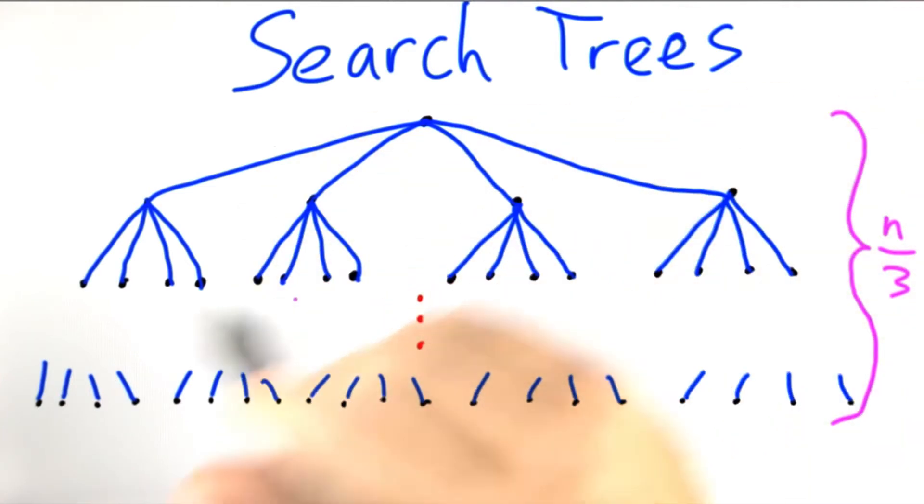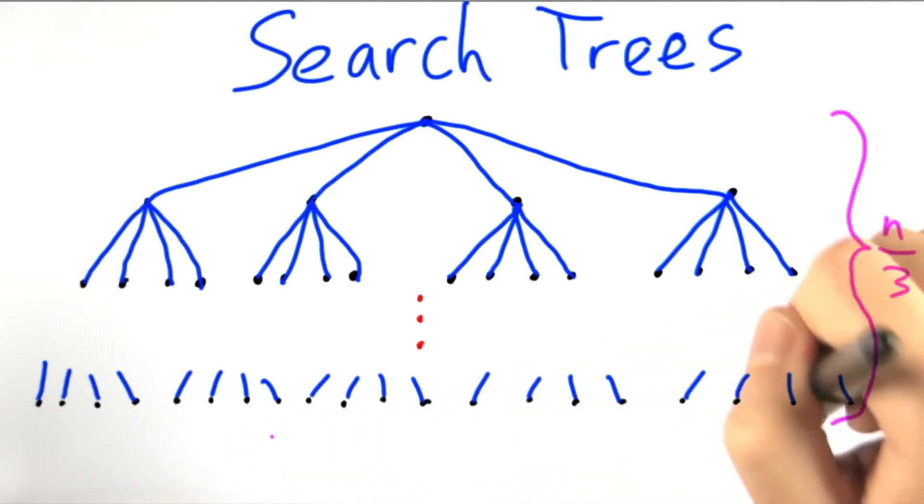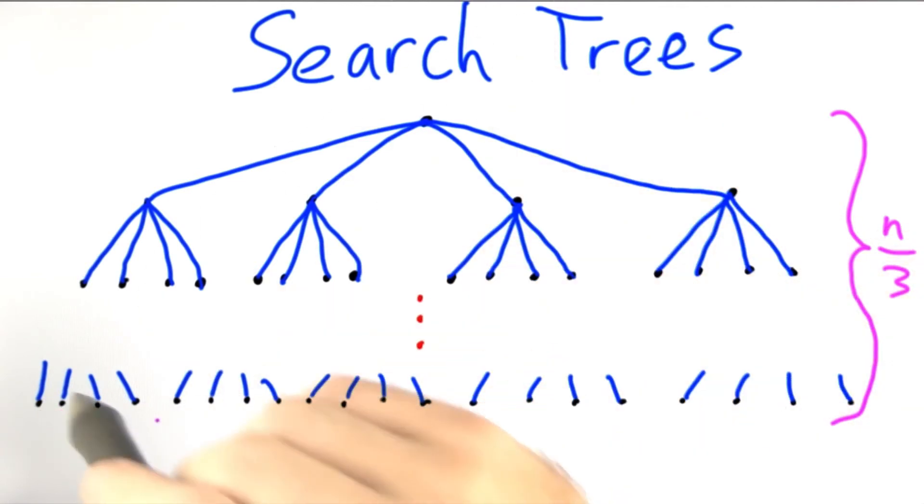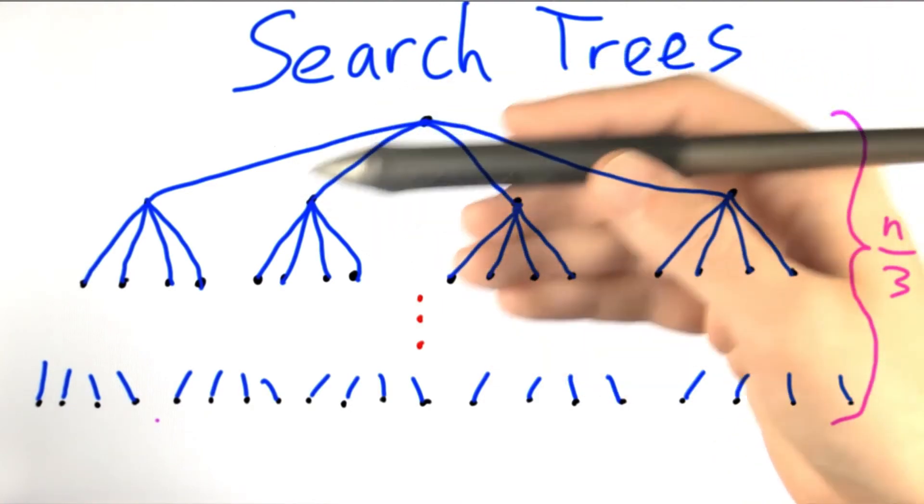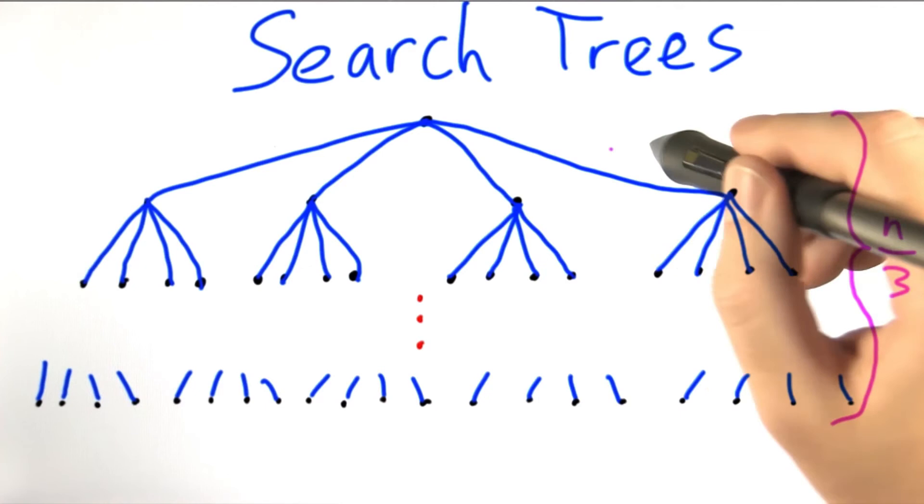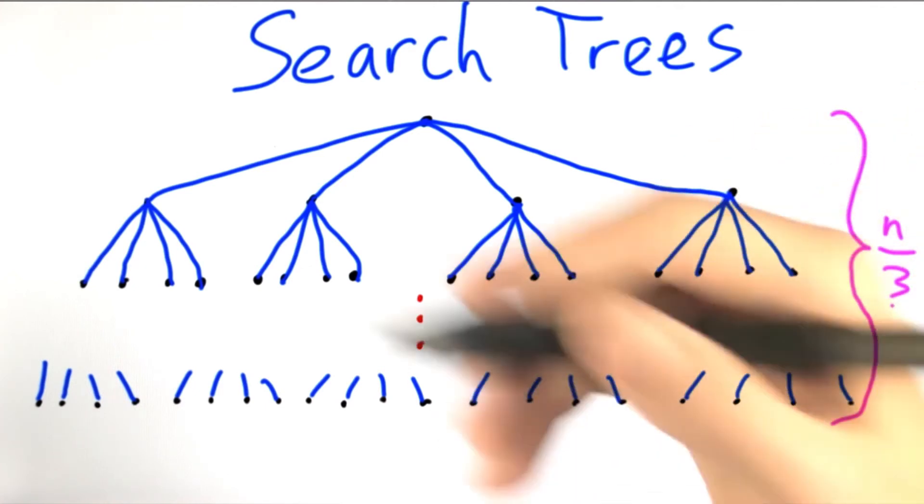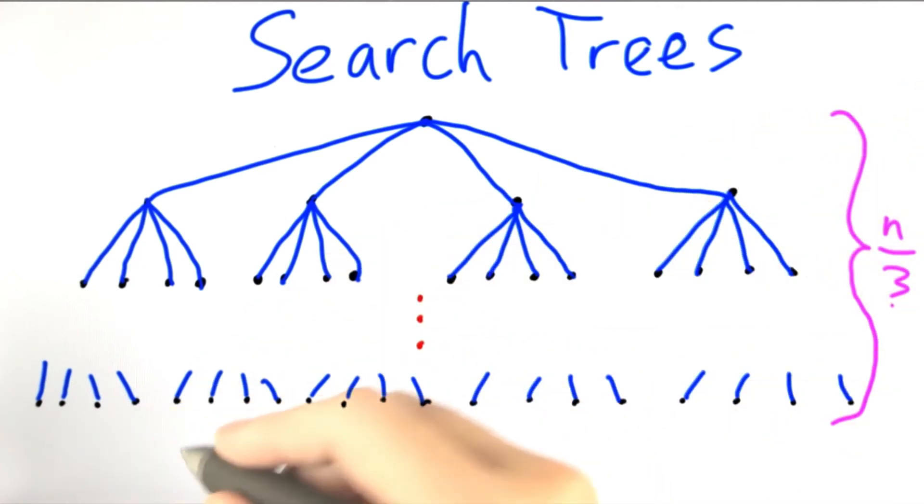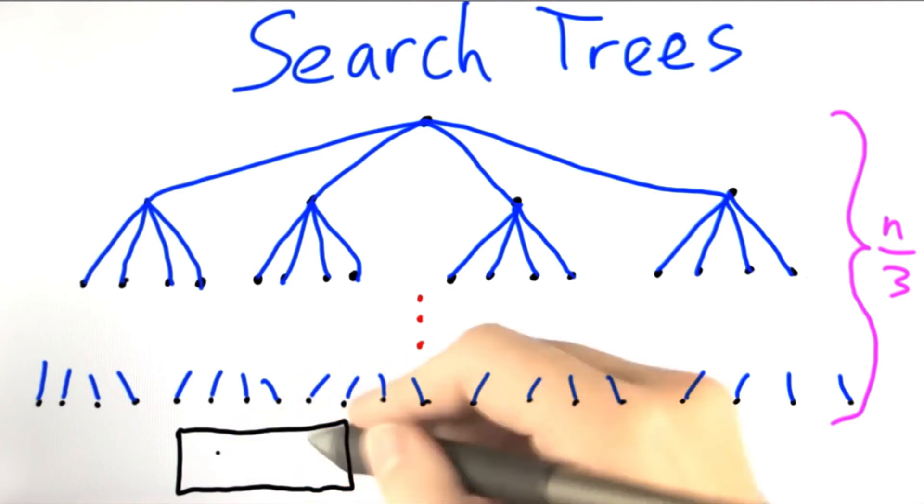Now since this is a search tree, all of these n leafs here represent a different possible solution that this search tree could come to. So my question is, how many solutions does such a search tree that splits 4 times at each branch and has a height of n over 3 actually go over? How many solutions are there? And please enter your answer in this box.